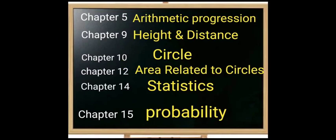In category 1, the chapters with no reduction are: Chapter 5 (Arithmetic Progression) — read fully; Chapter 9, which is Heights and Distances or Applications of Trigonometry (same chapter, different names in different books) — read completely; Chapter 10 (Circles) — no reduction; Chapter 12 (Areas Related to Circles); Chapter 14 (Statistics); and Chapter 15 (Probability) — no reduction. These six chapters have no reductions.